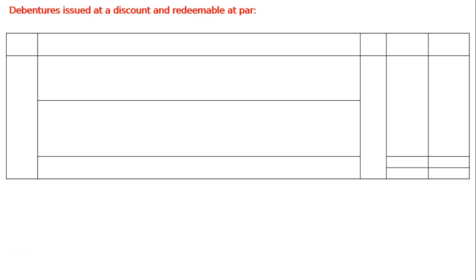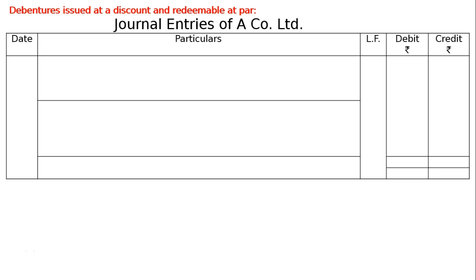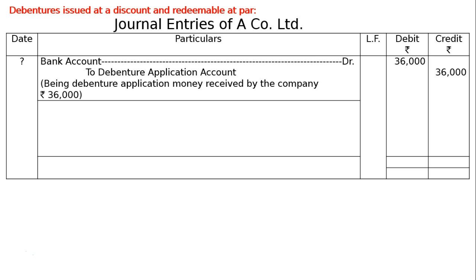The heading: debentures issued at a discount, redeemable at par. For the journal entries of A Company Limited, after drawing the format, write down: Bank Account debited to Debenture Application Account. 40,000 into 10% = 4,000 less, that is Rs. 36,000, both in the debit and credit column, being debenture application received by the company Rs. 36,000.